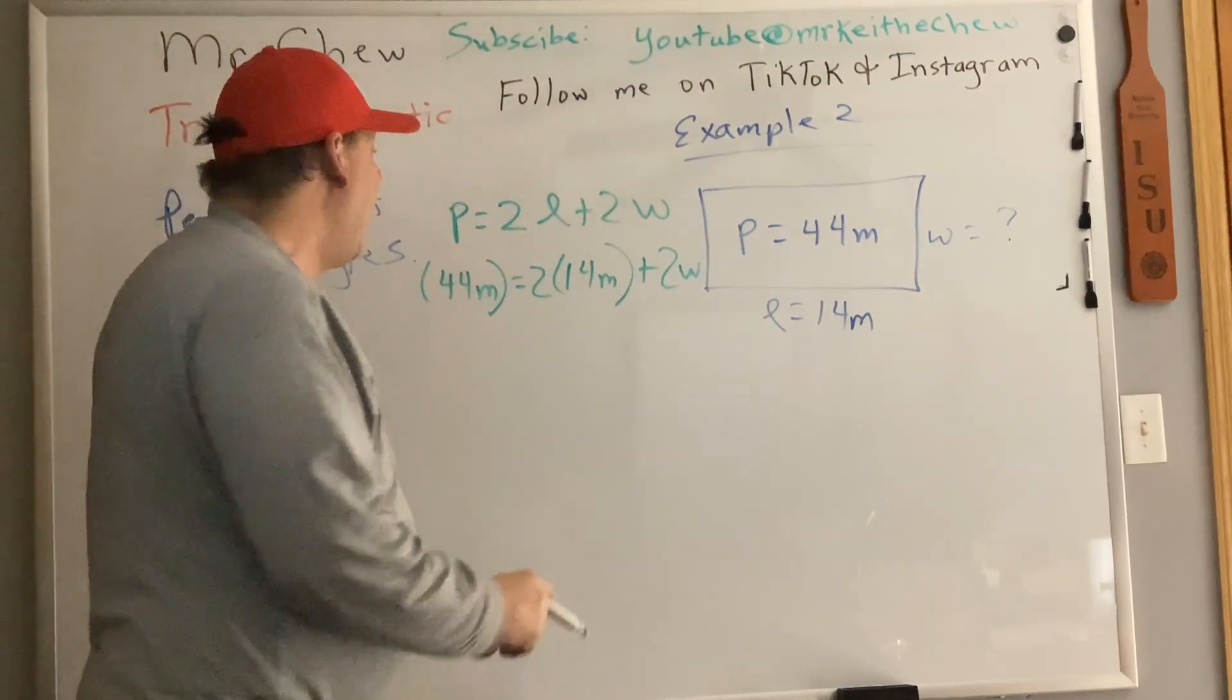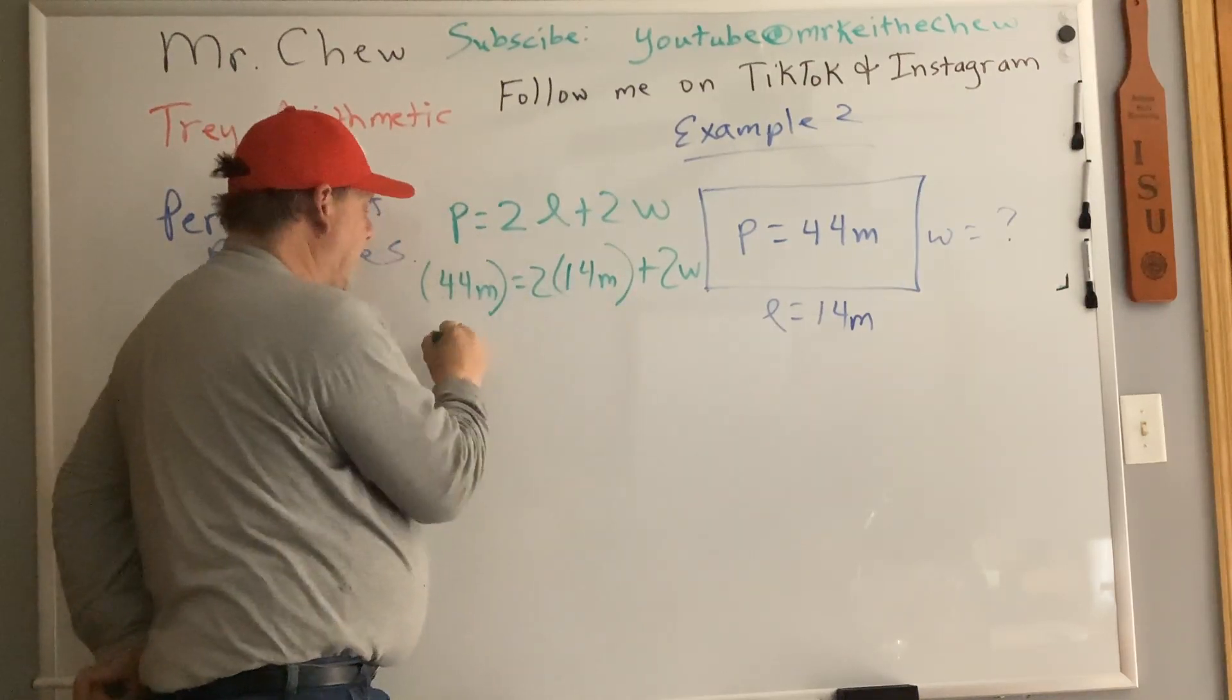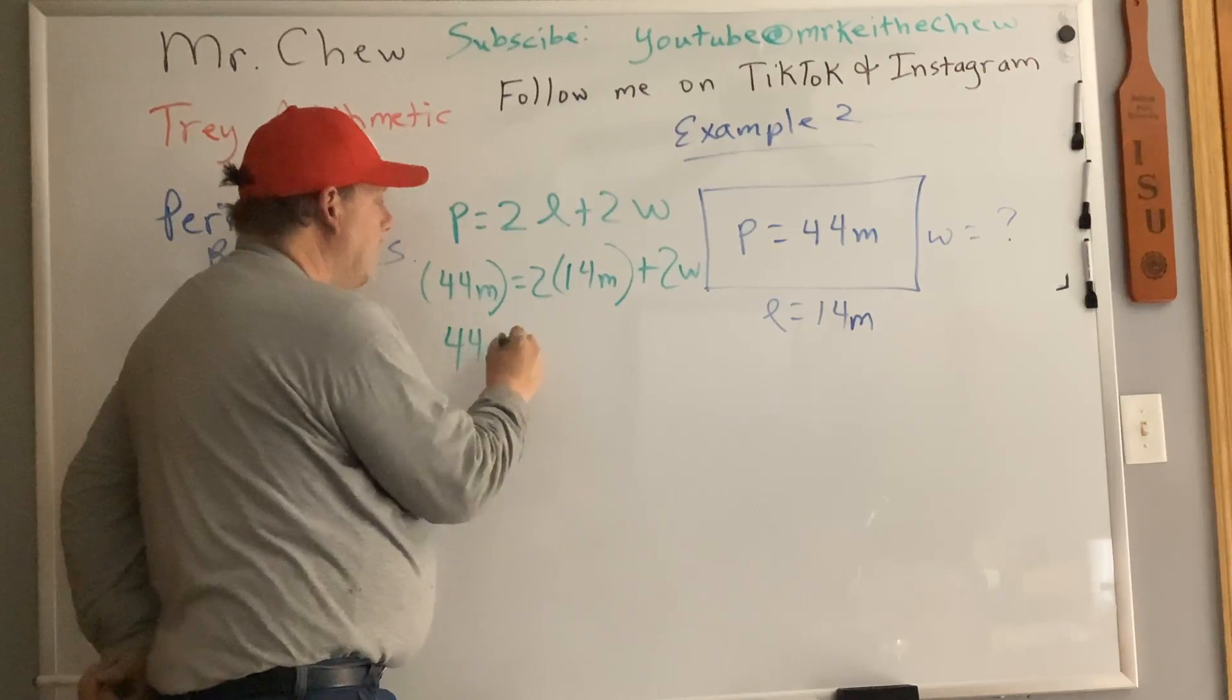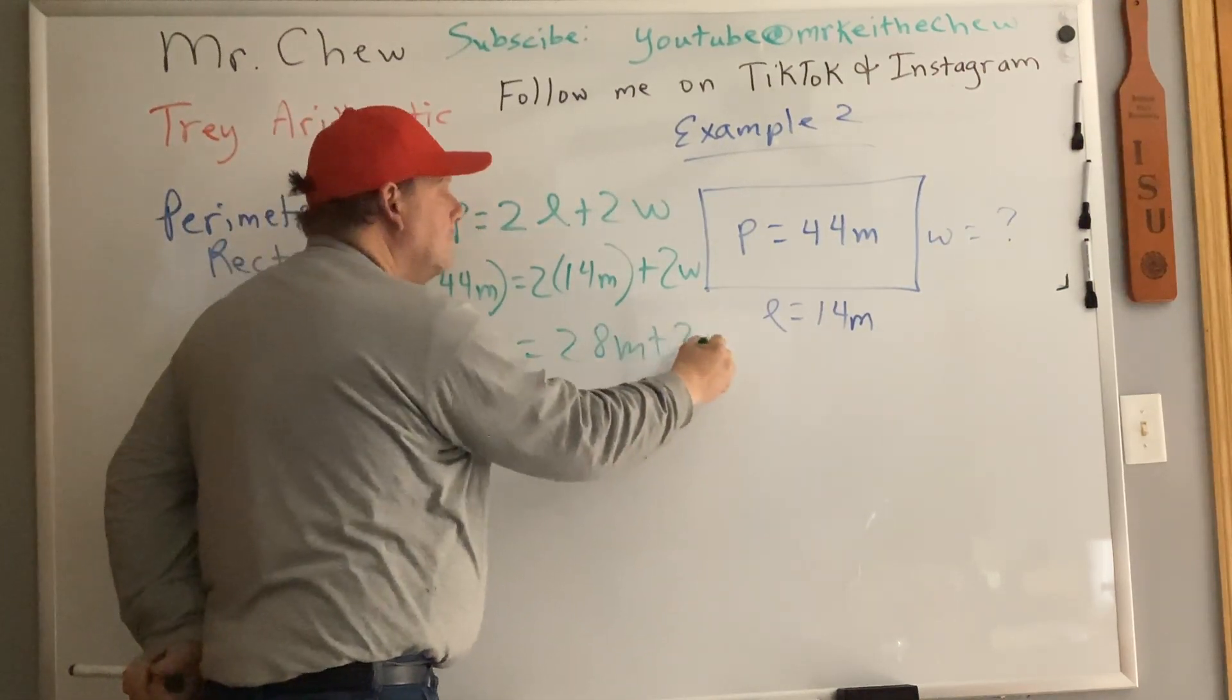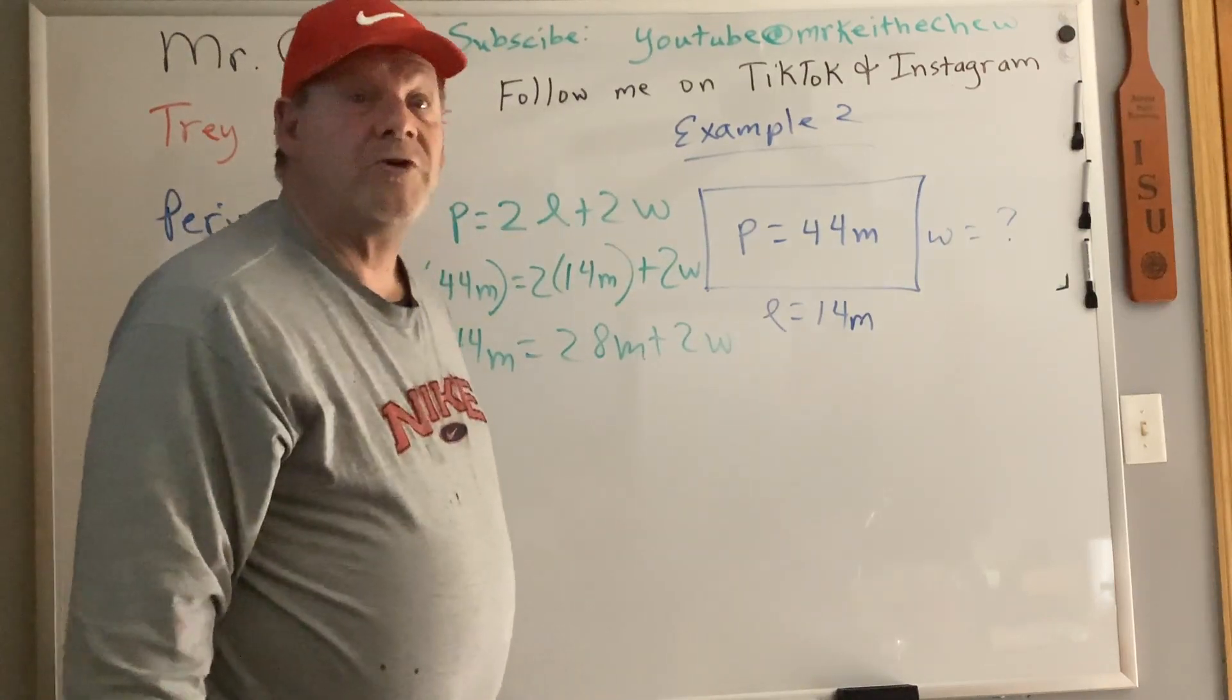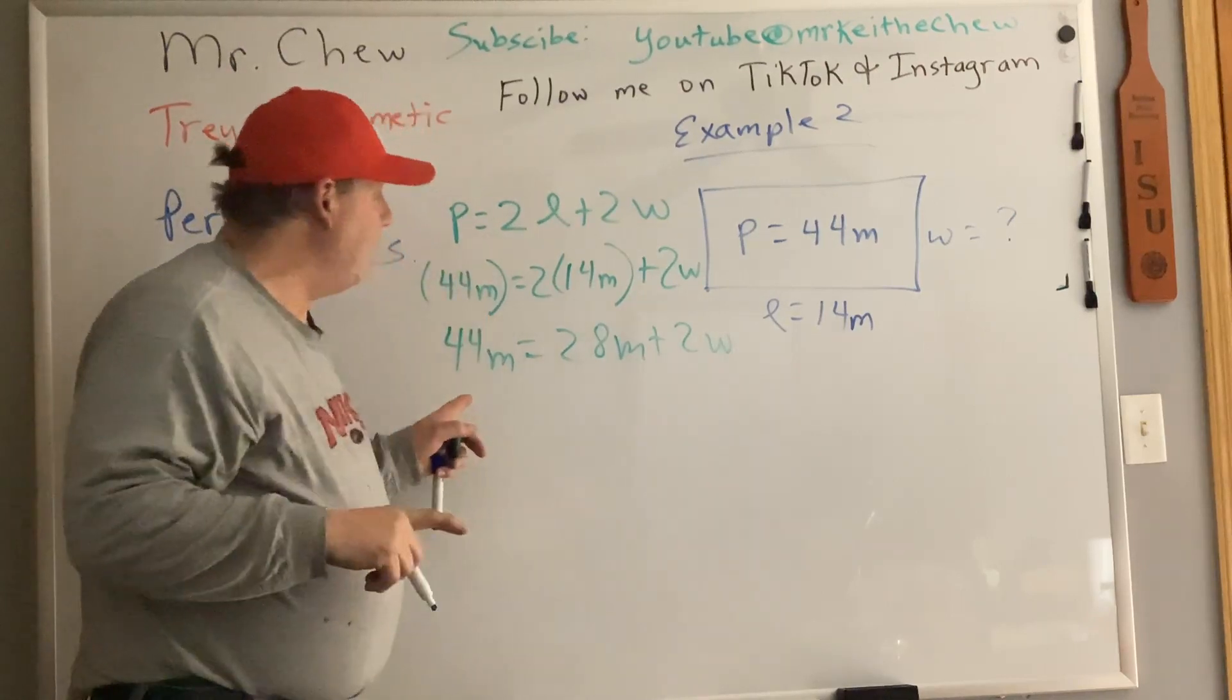For the L I substitute and that's 14 meters there, 14 meters here plus I don't know what the W is so I just write plus 2W. Now I have to simplify this by multiplying two times the 14 here, which is 28.